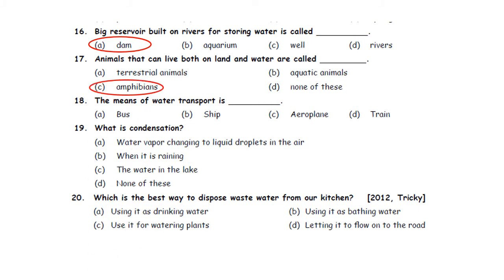Question eighteen: The means of water transport is dash. A. Bus. B. Ship. C. Aeroplane. D. Train. In the given options, the means of water transport is ship. So option B is the correct answer.